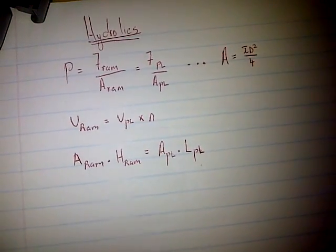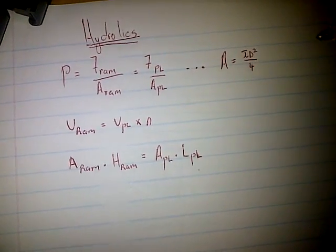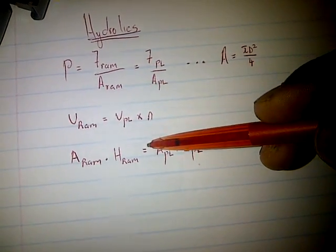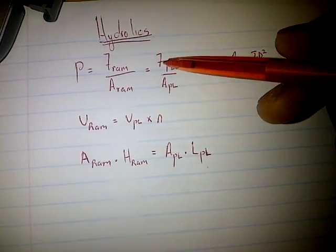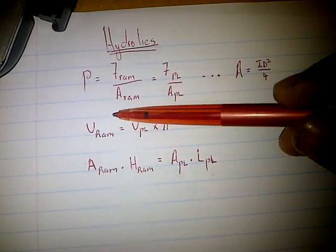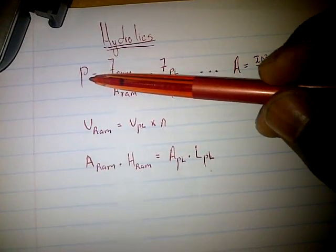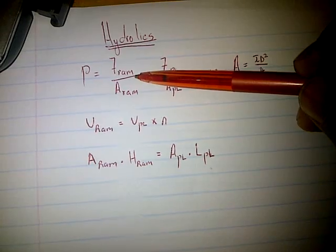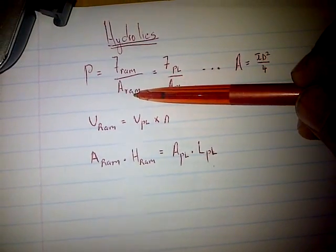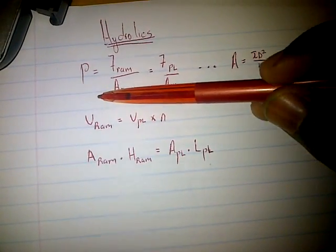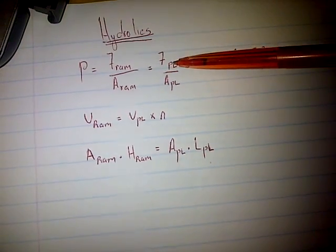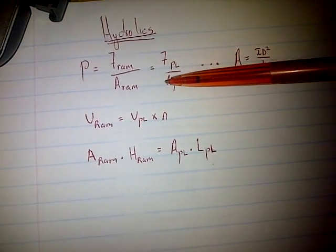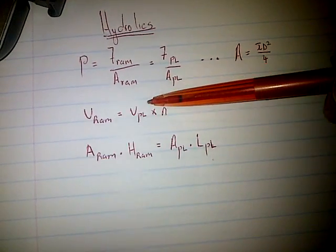Let's look at hydraulics. These are the formulas that you have in the formula sheet. Pressure is equal to force on the ram divided by area of the ram, or pressure equals force of the plunger divided by area of the plunger.